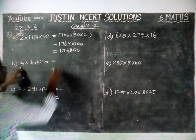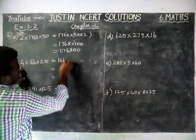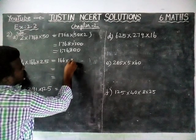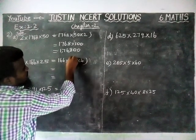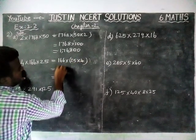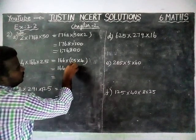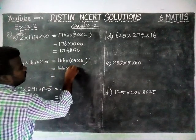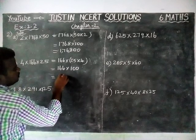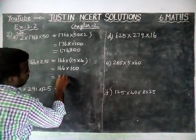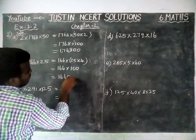Option B: 166 × 25 × 4. We multiply 25 × 4 first, which gives 100. So 166 × 100 gives us the answer 16,600.